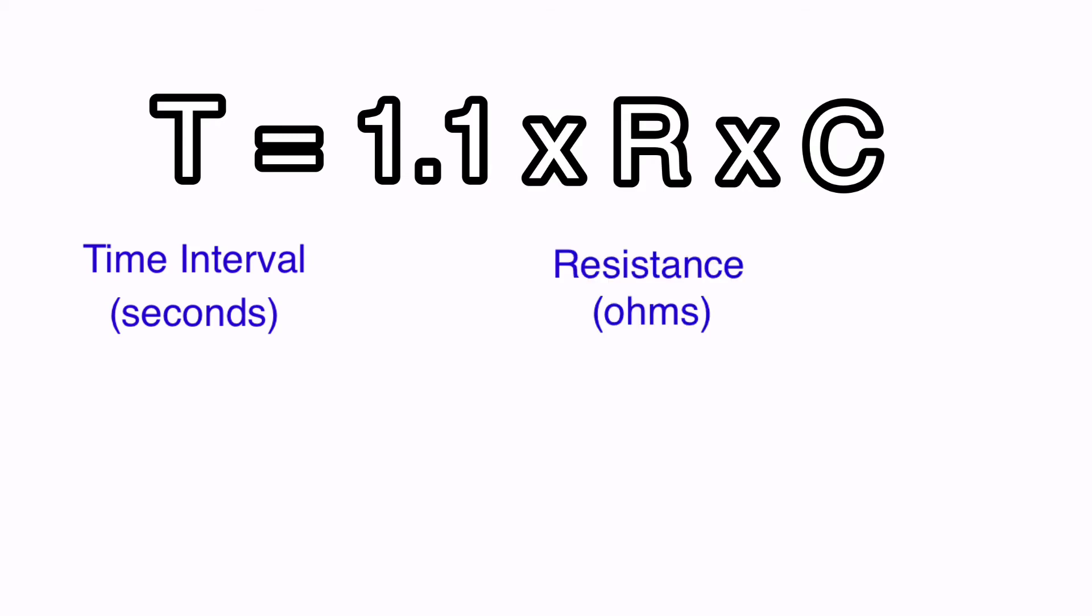R is the resistance value of our timing resistor in ohms. And C is the capacitance value of our timing capacitor in farads.